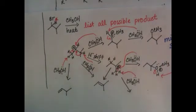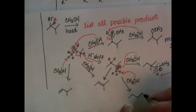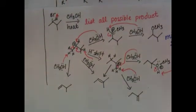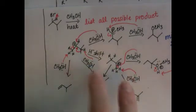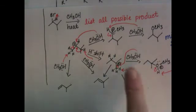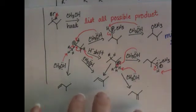In predicting the major E1 product, we don't look at the product that came from the more stable carbocation. That wouldn't even help us in this case. This was the more stable carbocation—it gave us two different products. What we look at is the most substituted, the most stable alkene, which is the most substituted alkene.